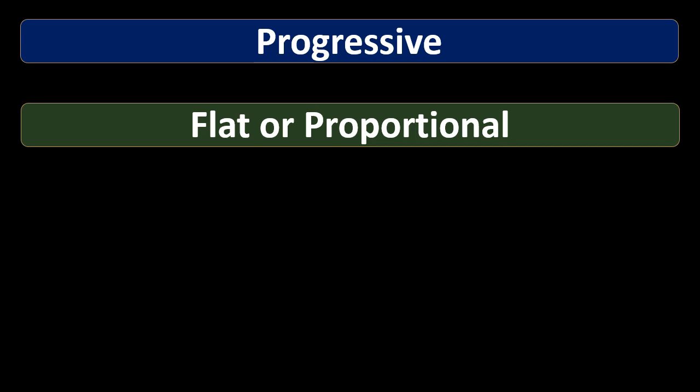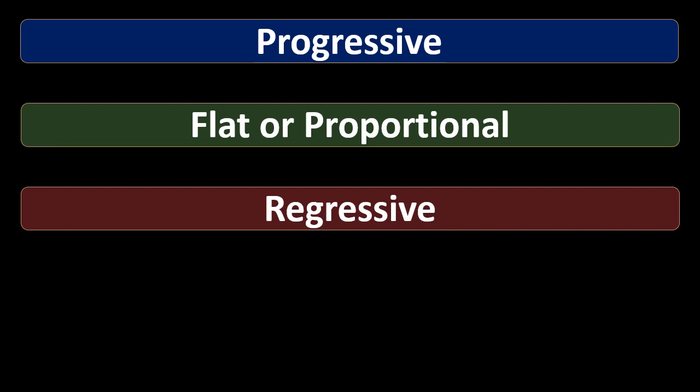The first tax system you'd likely invent for an income tax would be a flat tax. Then we have a regressive tax — we'll talk about the definition, but you'll often hear this term. It basically means that the lower income portion is somehow being taxed more than upper income individuals in some way. We'll talk more about that at the end.